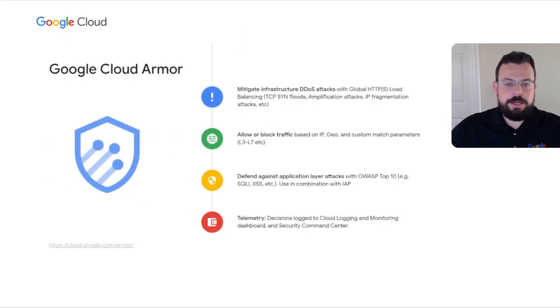Cloud Armor is Google Cloud's DDoS protection service and web application firewall. It provides global scale defense against volumetric, protocol, and application level attacks, offering the same protection for hybrid and multi-cloud workloads as it does for ones deployed on GCP. It's built using the same technology and infrastructure that we originally developed to protect our own billion-user properties, such as Search, Gmail, and Maps. Cloud Armor reflects our vision of bringing to bear Google's global scale to protecting workloads wherever they are deployed.